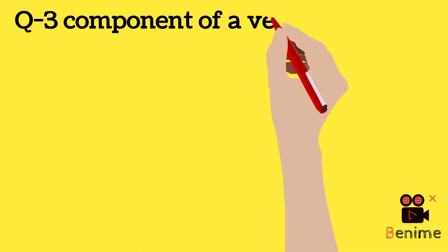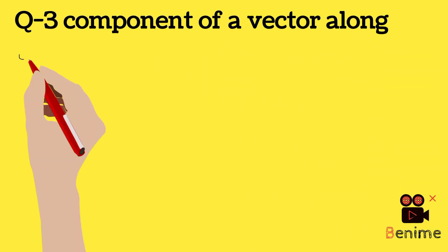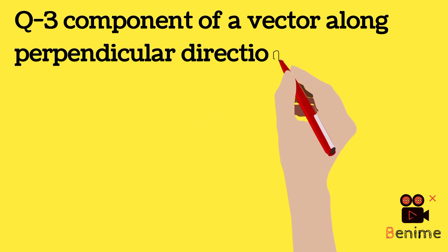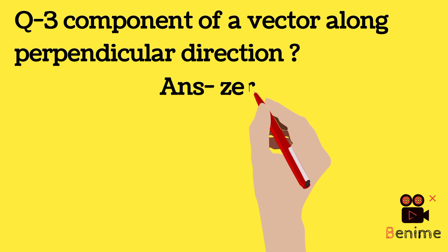Component of a vector along perpendicular direction is zero.